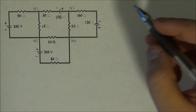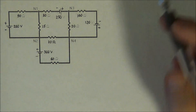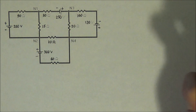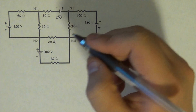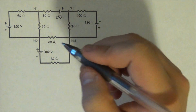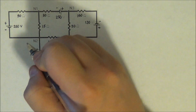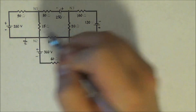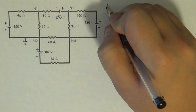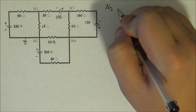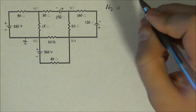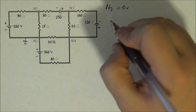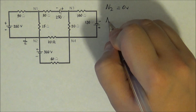Alright, this is question number 2. As you can see, there's no ground given to us, so let's just arbitrarily put it at node 2. This means that N2 is automatically equal to 0 volts. Let's start writing the equation.